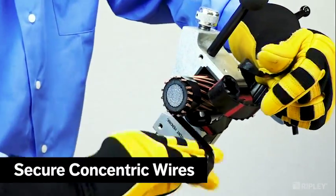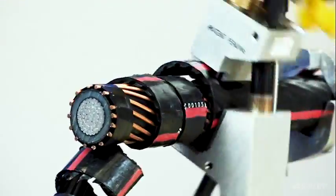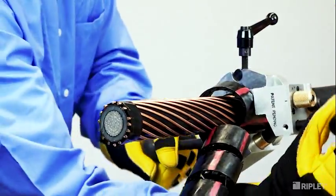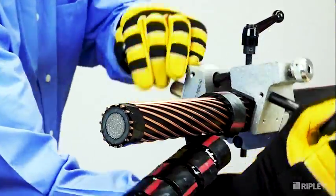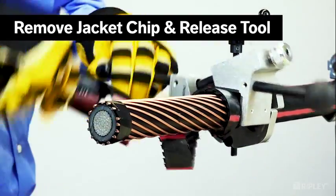Secure the concentric wires with electrical tape to prevent them from separating or catching. Continue to rotate the tool until the Infinity reaches the stop clamp. Remove the jacket chip and release the tool from the cable.